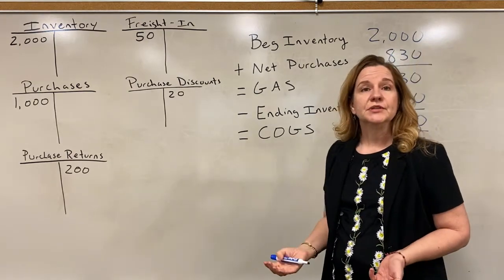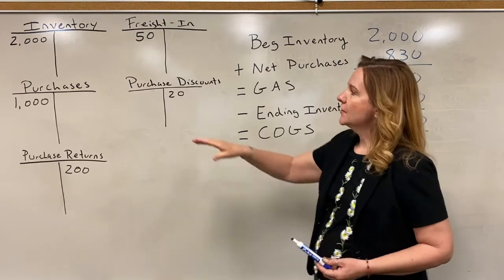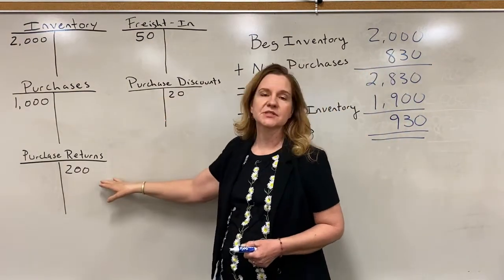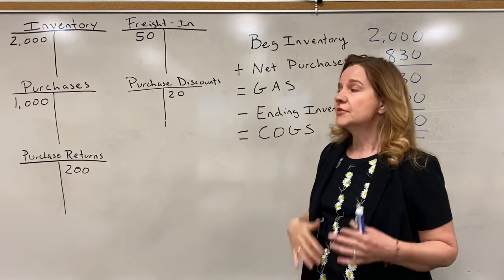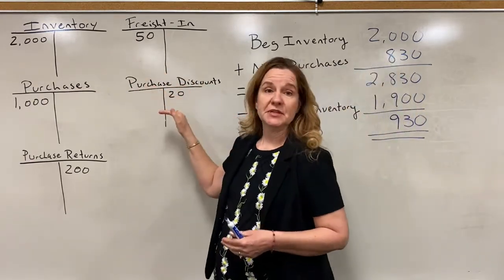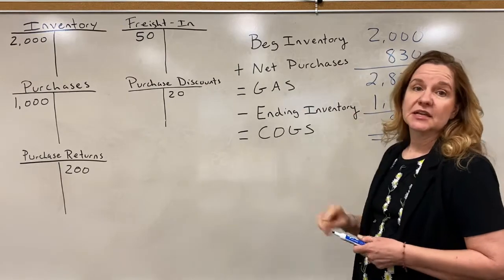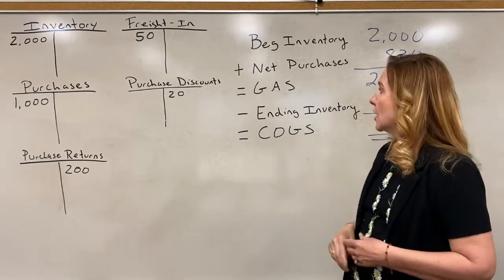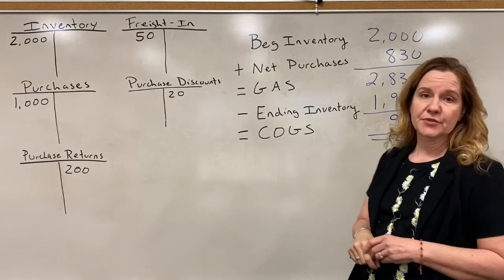Now we're going to do the journal entry to close it out. The purchases, freight in, purchase discounts, and purchase returns are temporary accounts — they're going to close out to zero. The inventory account will be adjusted so we end up with $1,900 in that account at the end. Our cost of goods sold will be recorded for $930.